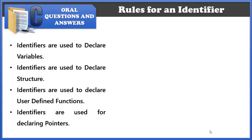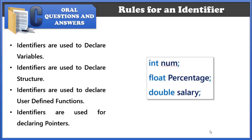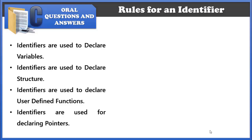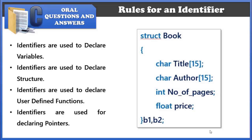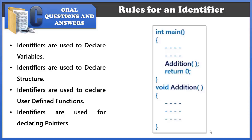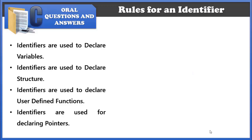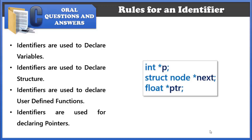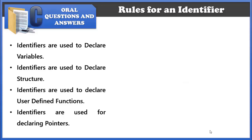Identifiers are used in several places in C. They are used to declare variables — for example, num, percentage, and salary are identifiers. They can also be used to declare structures — in this example, book is the structure name, and the members title, author, number of pages, price, as well as the structure variables b1 and b2 are all identifiers. Identifiers are also used to declare user-defined functions — for example, addition is an identifier. Finally, identifiers are used for declaring pointers — p, next, and ptr are all identifiers.